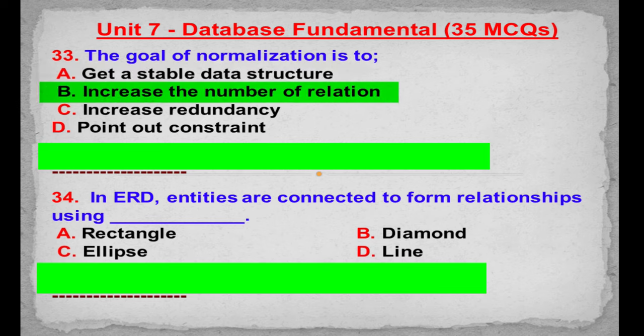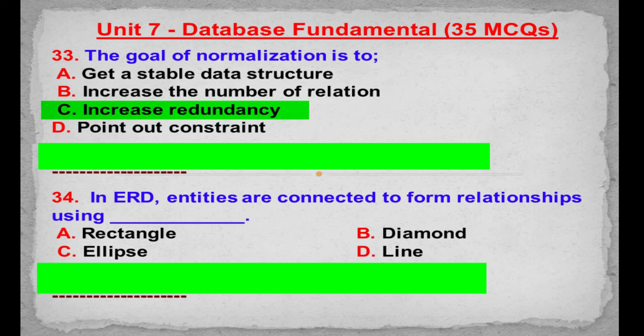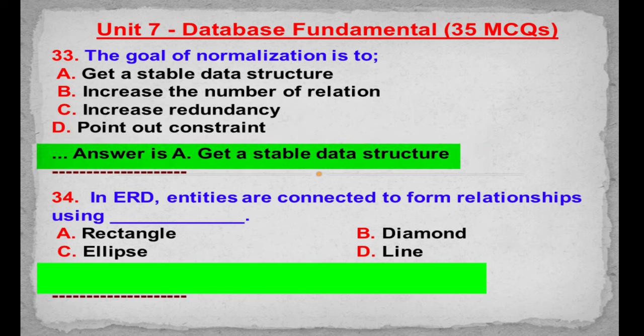MCQ number 33: The goal of normalization is to get a stable data structure. Option A: Get a stable data structure. Option B: Increase the number of relations. Option C: Increase redundancy. Option D: Point out constraint. Correct answer is Option A: Get a stable data structure.